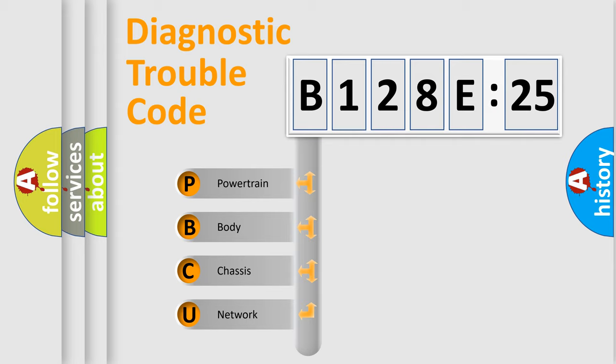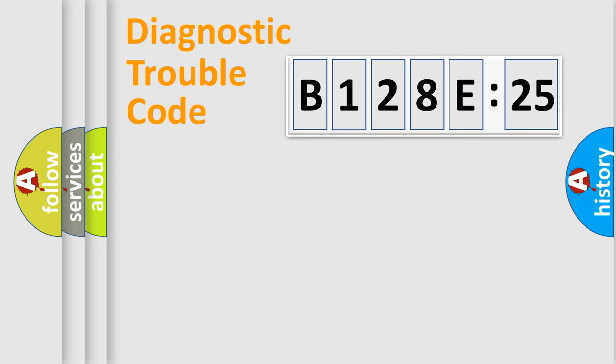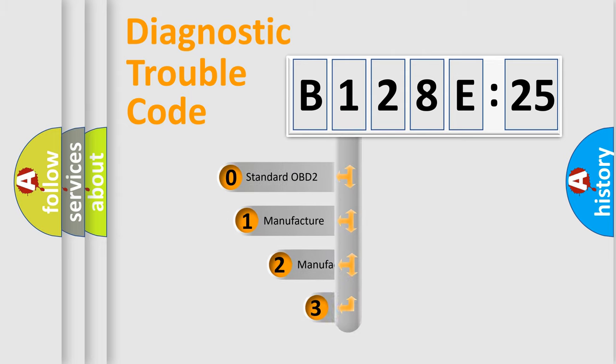We divide the electric system of automobiles into four basic units: Powertrain, Body, Chassis, and Network. This distribution is defined in the first character code.